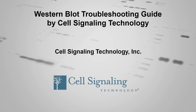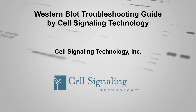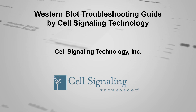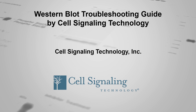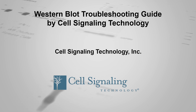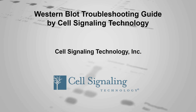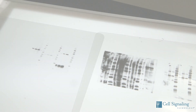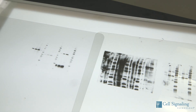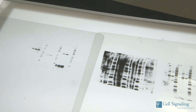Western blotting, also called immunoblotting, allows researchers to determine levels of protein expression in a cell or tissue extract through antibody binding to a specific protein of interest. Although this technique is widely used and accepted, problems can occur that lead to suboptimal results, such as low signal or high background, resulting in blots that are difficult to interpret or quantitate.